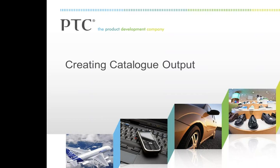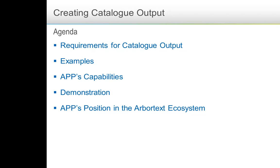What I want to talk about is how that information gets onto the page in the first place, and I'm going to be concentrating mostly on the APP engine. Although Styler has got some capabilities that would benefit this area, the APP engine is really the tool of choice. I'll first look at requirements around creating catalog type output, then some examples, then APP's capabilities, and finally how APP fits into the ArborText ecosystem.